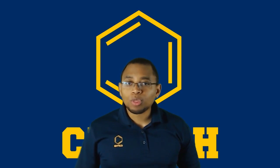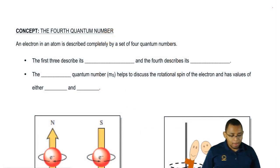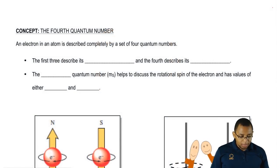Now we're going to finally get to see the fourth quantum number. So remember, an electron in an atom is described completely by all four quantum numbers.